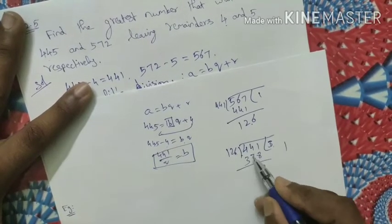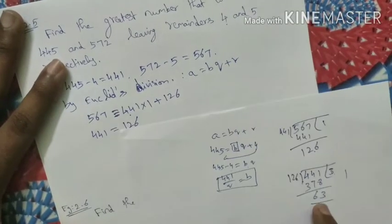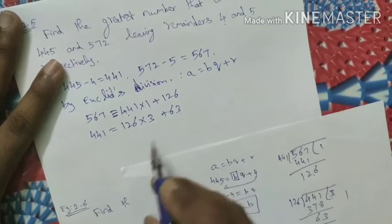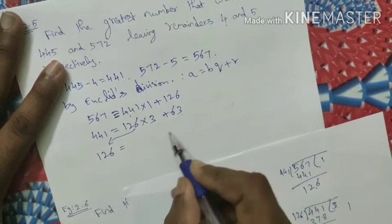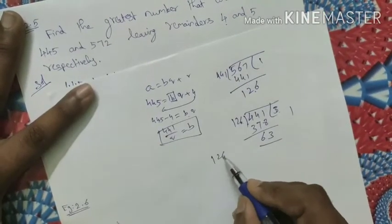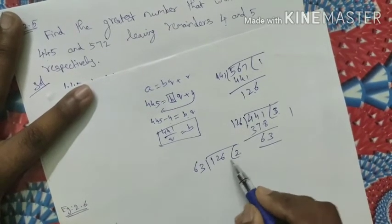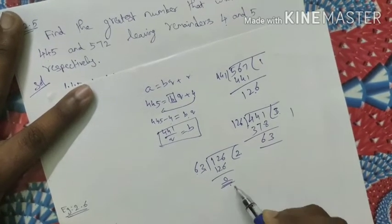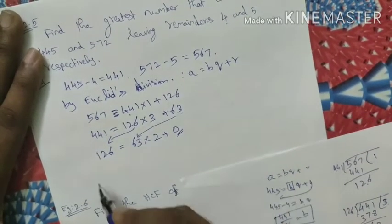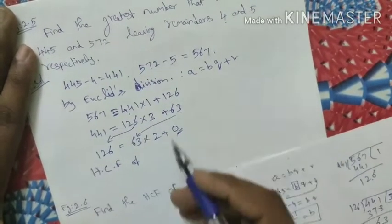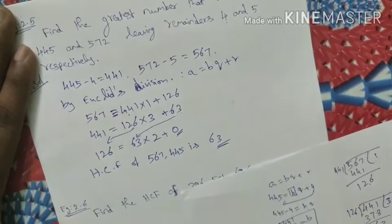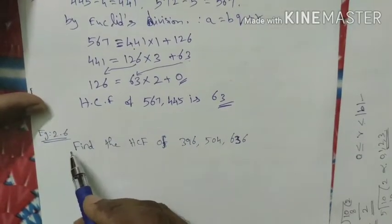So 441 equals 126 into 3 plus 63. The remainder is 63, still not zero. Now 126 divided by 63: 63 goes 2 times, giving 126 with remainder 0. The remainder is 0, so the highest common factor of 567 and 441 is 63. Therefore the answer for example 2.5 is 63.